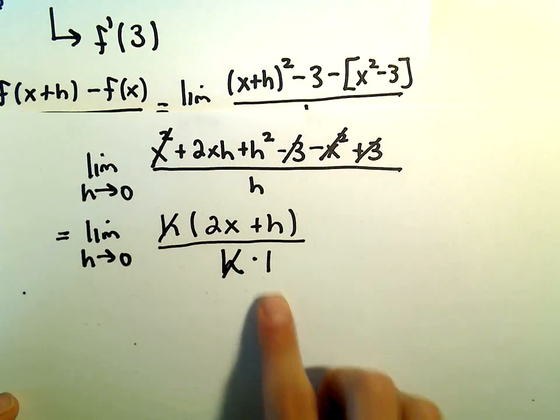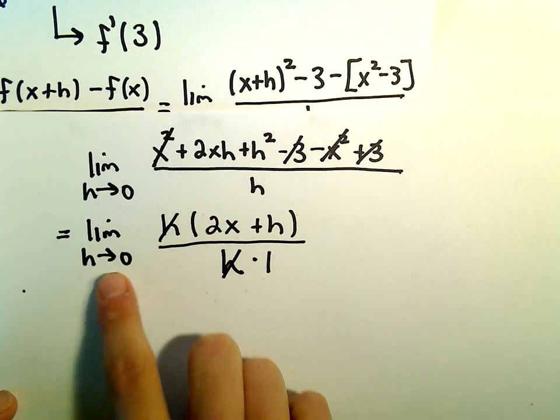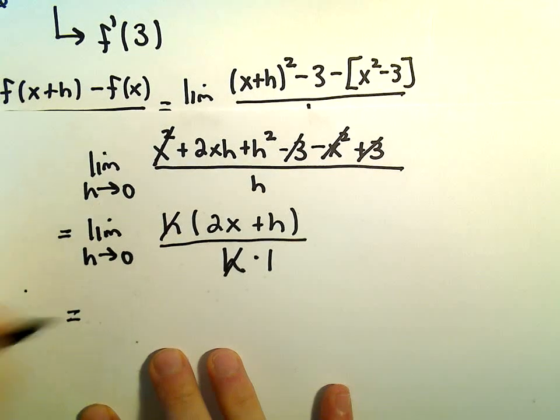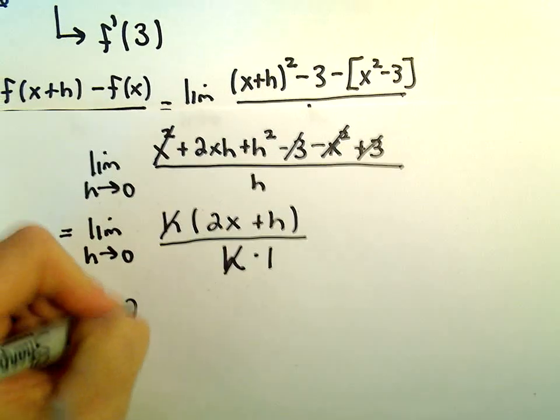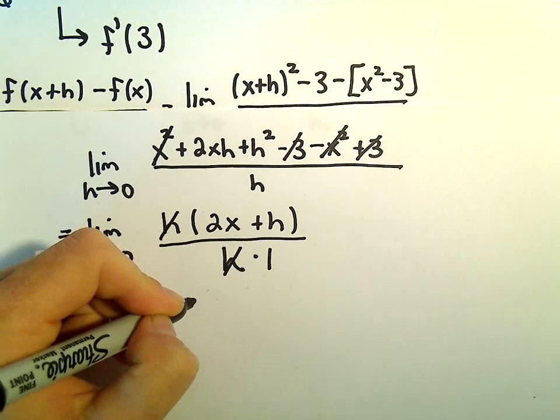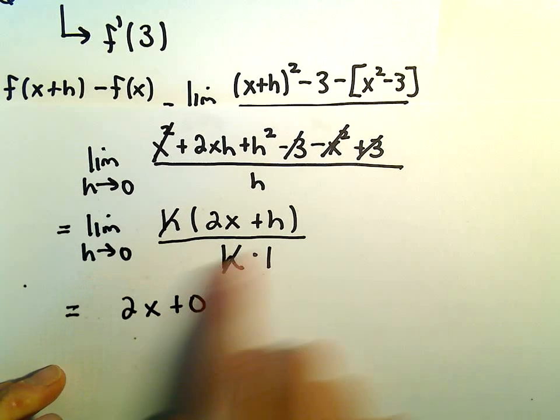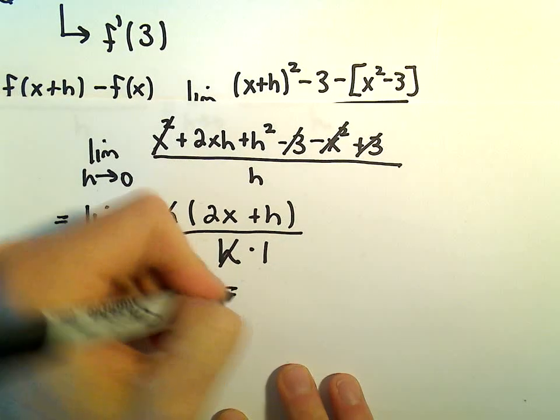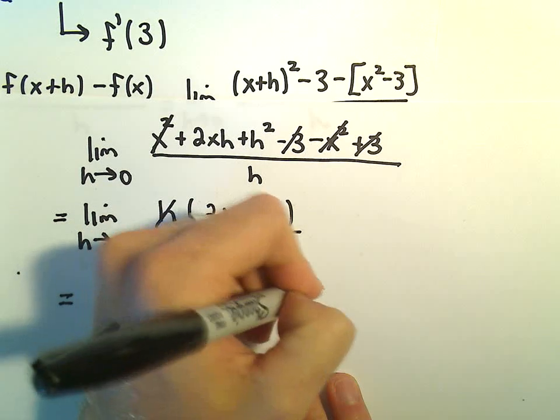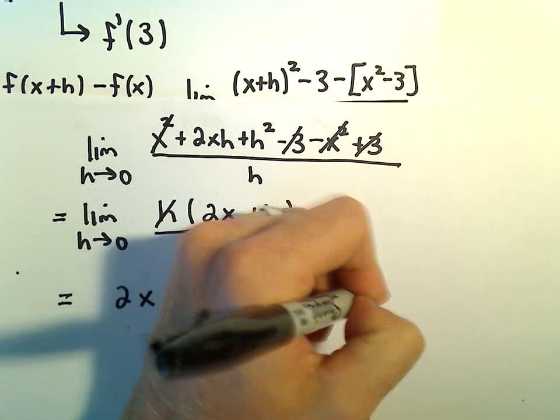Now when we plug in h = 0, we're left with 2x + 0, or just 2x. That's the formula for our derivative.